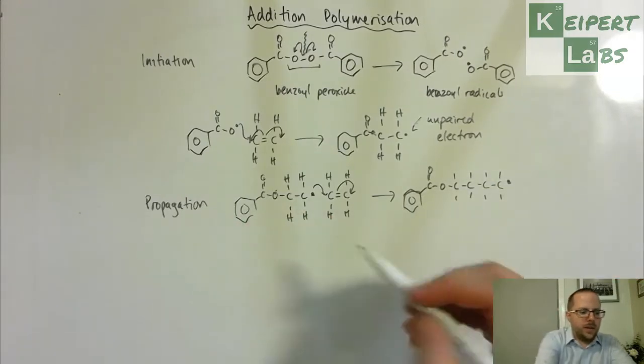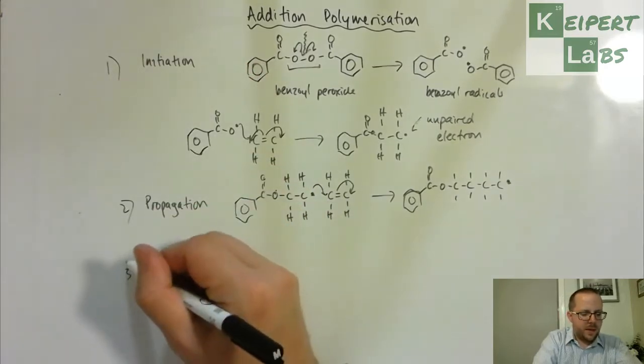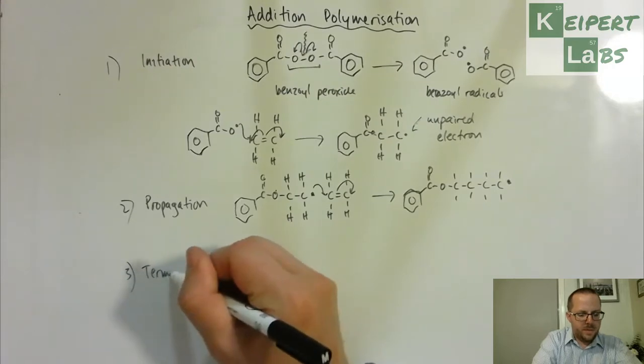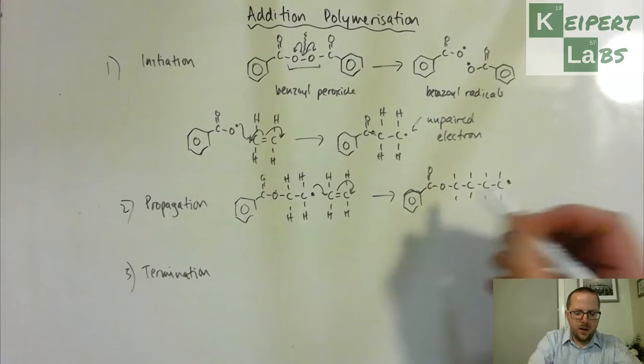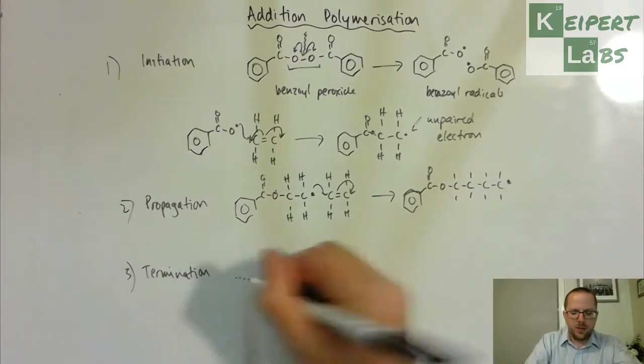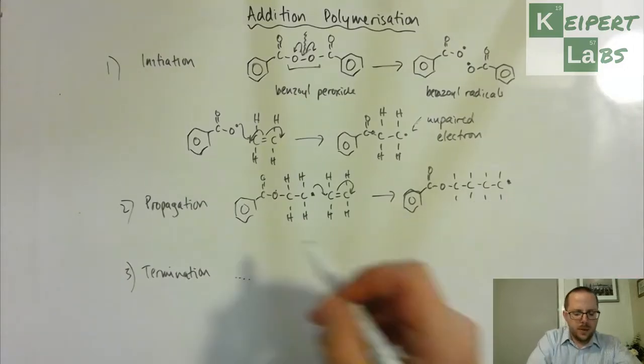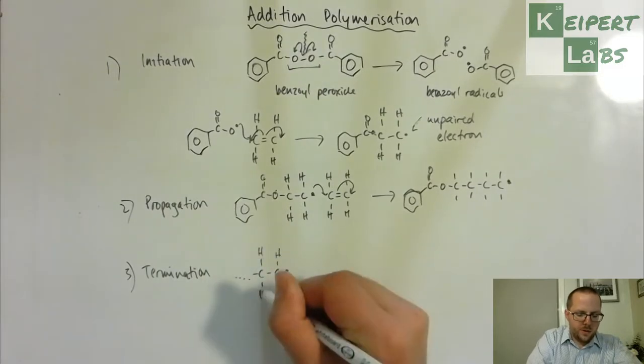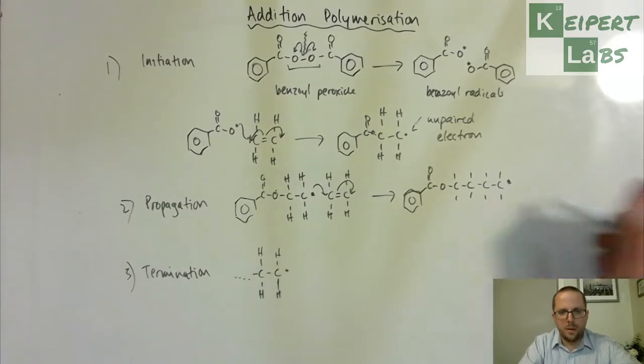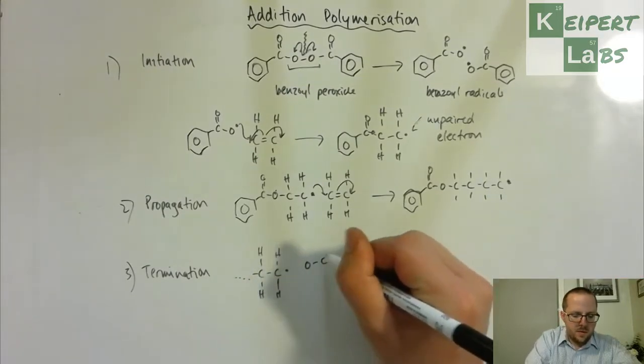So we get step one we start the process, step two we continue the process, and step three we terminate the process. So what happens then is that we've got our chain now, I'm just going to, you know this will be many hundreds of units long at this point, and so we've got our carbon bond here, we've got an unpaired electron here on the whatever that far end would be, and then it encounters another radical.